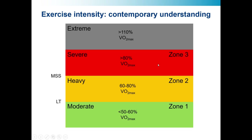In training parlance — particularly polarized training — moderate intensity exercise is Zone 1, heavy intensity is Zone 2, and severe intensity is Zone 3. There is also a five-zone training model and the four training levels of the former British Cycling Federation, which you can map to these descriptions. But in reality, humans don't look as neat as a simple table — this is what it actually looks like on a ramp test.